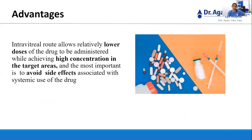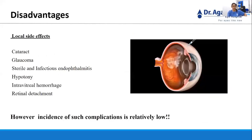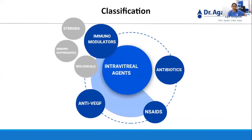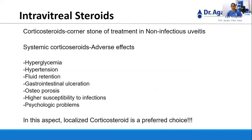Uveitic macular edema is the most common structural complication, causing visual morbidity in up to 40 percent of patients. The pathophysiology has not been fully understood, with the most important cause attributed to dysfunction of the blood-retinal barrier. The advantage of intravitreal drug delivery is that it allows a relatively lower dose while achieving a higher concentration in the target area and avoiding the side effects associated with systemic use. Disadvantages of intravitreal injection include local side effects like cataract, glaucoma, sterile and infectious endophthalmitis, hypotony, intravitreal hemorrhage, and retinal detachment, though the incidence of these complications is relatively low.